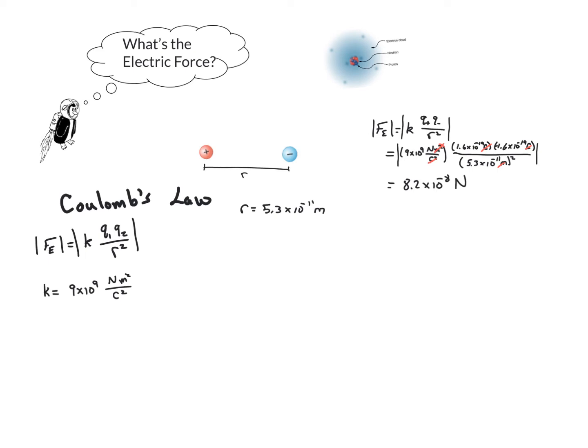But how big is this force? We could compare it to the gravitational force between the electron and the proton. Recall from earlier units that big G is the universal constant of gravitation, and the mass of the electron and proton can be looked up. We also keep the radius the same as the earlier portion of this problem.